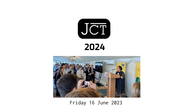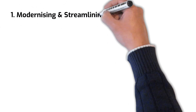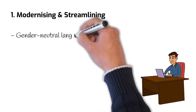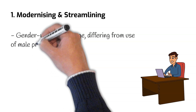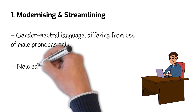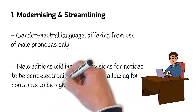The main features of the JCT 2024 suite have been reported, which includes updates and changes corresponding with the following work streams. Number 1: Modernising and Streamlining. JCT has reported that the new editions will take a progressive approach with the adoption of gender-neutral language, differing from previous editions' use of male pronouns only. JCT have also confirmed that the new editions will include provisions for notices to be sent electronically, as well as allowing for contracts to be signed electronically.